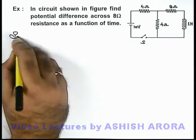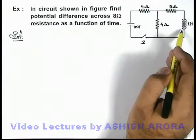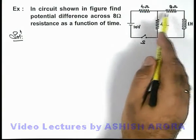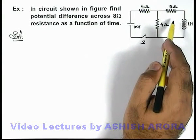Now here if we are able to calculate the current in inductor as a function of time, then directly we can calculate the potential difference across this resistance.